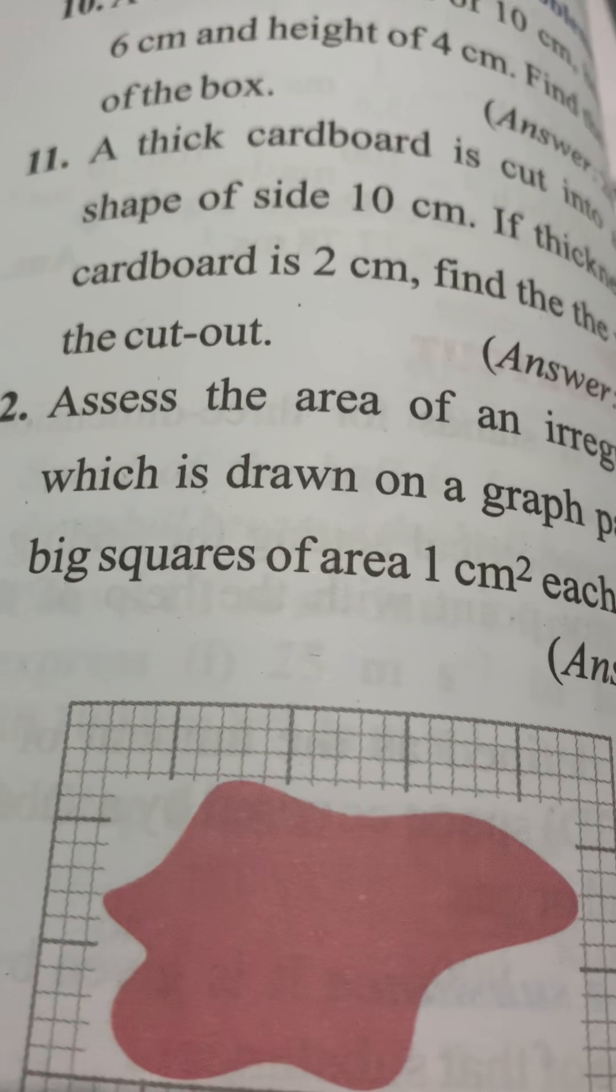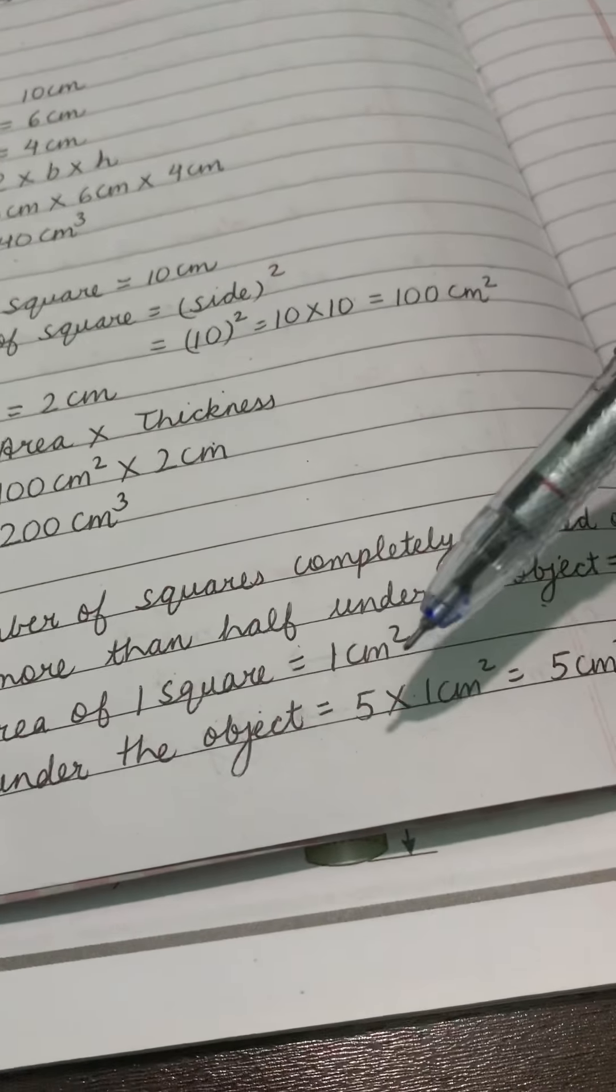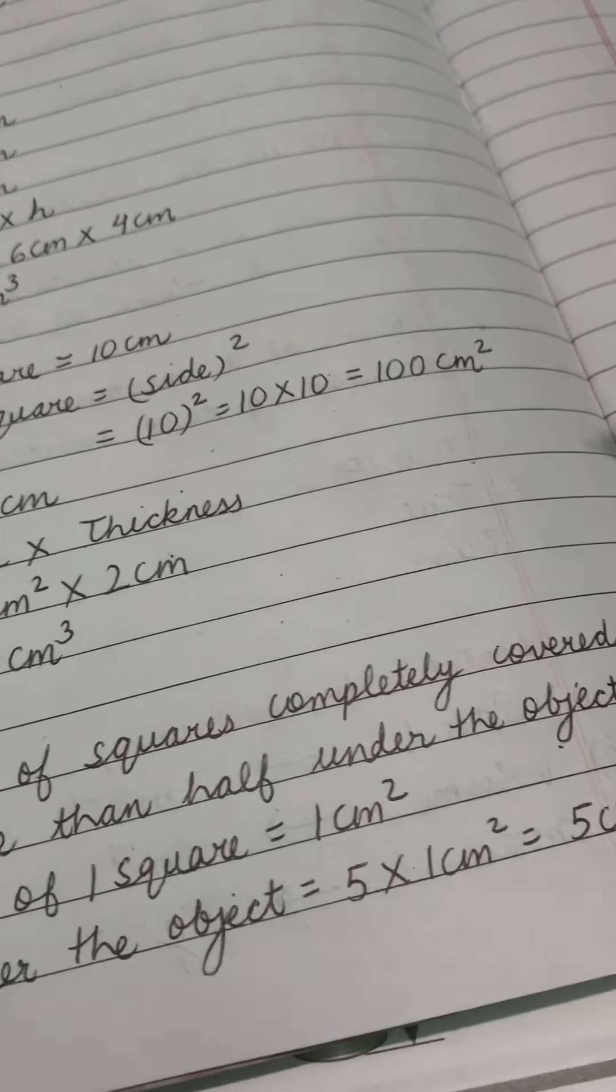And if you will see it observed properly those are 5 squares. How many squares are there? 5 squares are there and it is also given to you that area of 1 square is 1 cm square. Since area of 1 square is 1 cm square so 5 squares means 5 into 1 cm square that is 5 cm square.